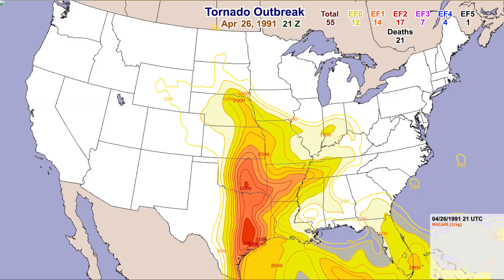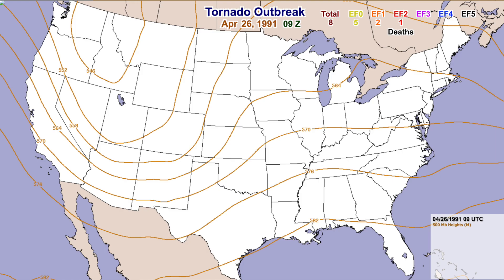The lifted index is a parameter that takes into account temperature, moisture, and other factors between different levels of the atmosphere. The important thing to take away is that if you have a lifted index lower than negative 6, you have a pretty good chance of severe storms and thunderstorms. But if you have one lower than negative 9 — like in this example with negative 12 — it's an 'oh my gosh' scenario. That's one of the parameters you look at that tells you today is going to be big.